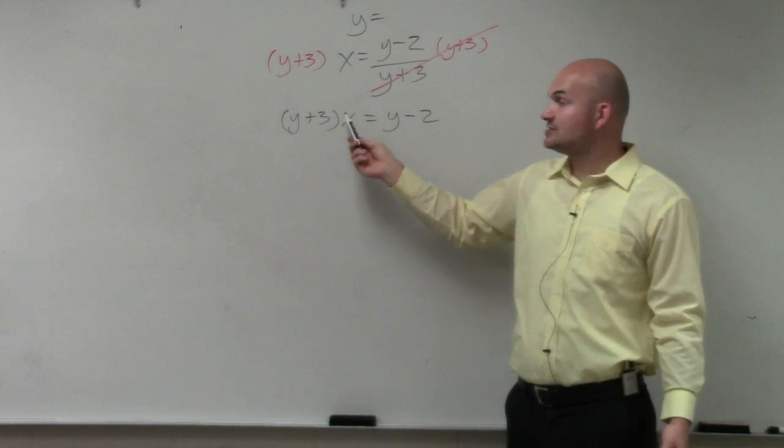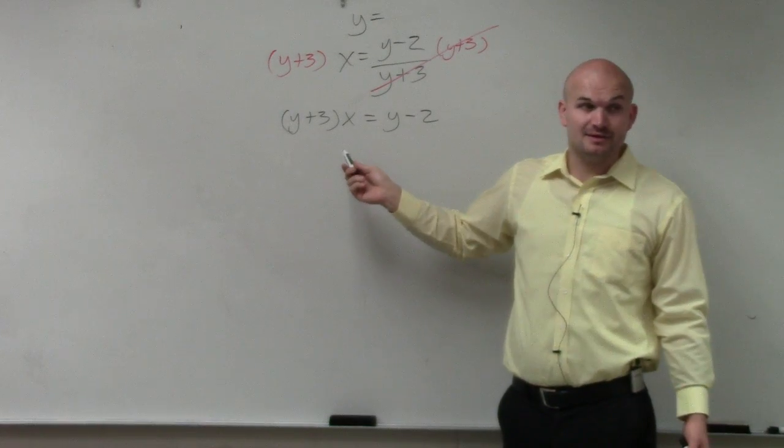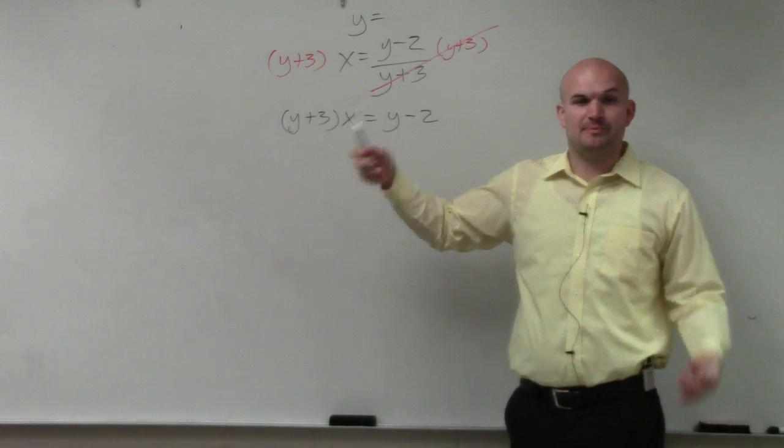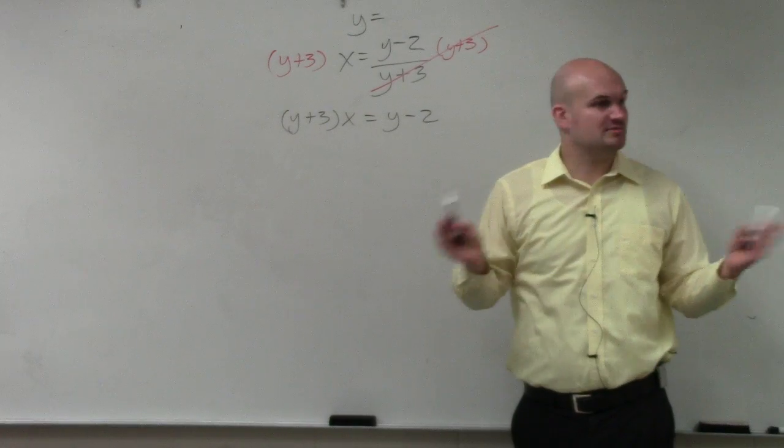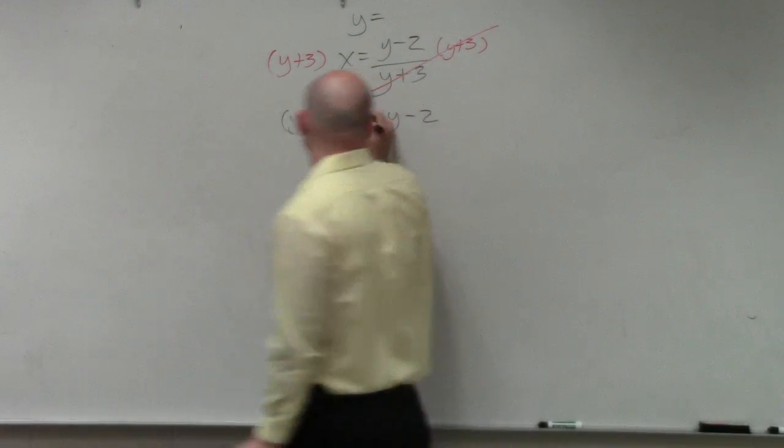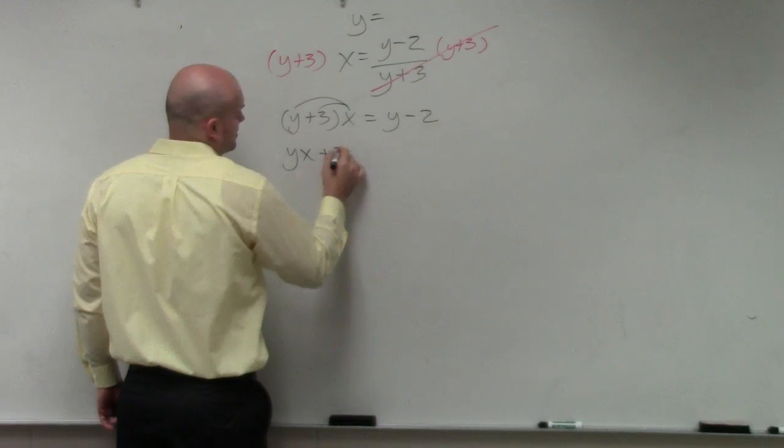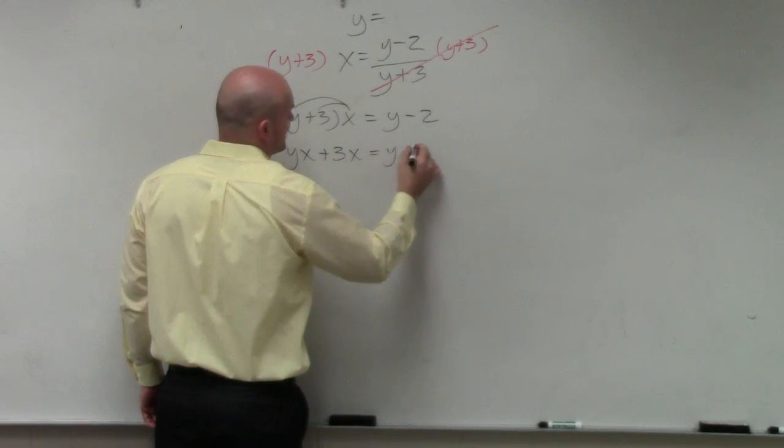So what I'm going to do is first get rid of these parentheses using the distributive property. Then I'm going to get the y's on the same side. It doesn't matter if it's the left side or the right side. But let's see what happens. So I get yx plus 3x equals y minus 2.